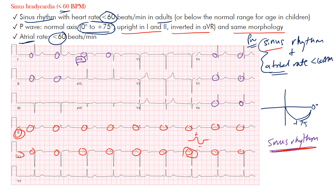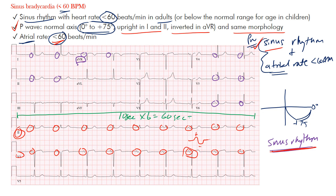So we know sinus rhythm is present based on what we saw — check that off. Now we need the atrial rate to be less than 60 beats per minute. To find the atrial rate, we use those P-waves. The standard 12-lead ECG is 10 seconds in duration; multiply by six and you get 60 seconds, one minute. Count the number of P-waves across and multiply by six to get the atrial rate in beats per minute.